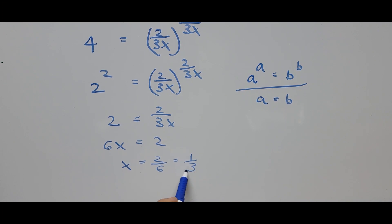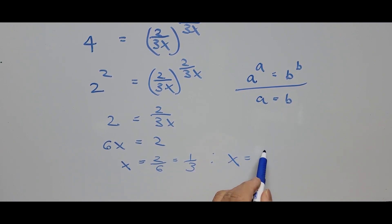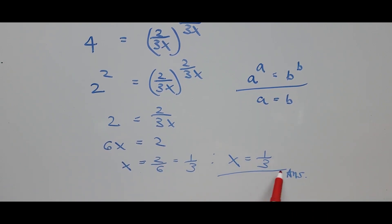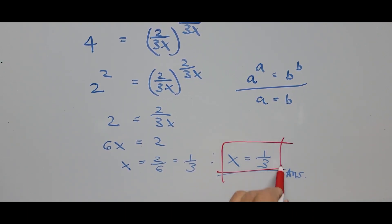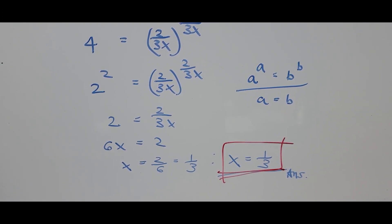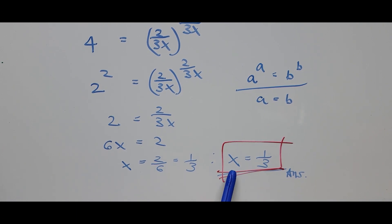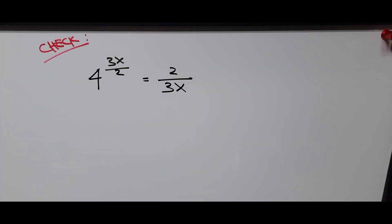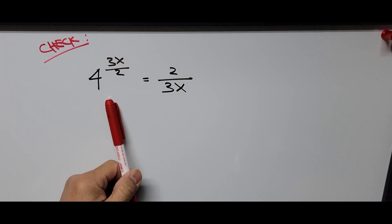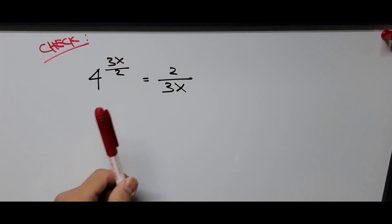So x is equal to 2 divided by 6, which equals 1/3. Therefore x equals 1/3 — that is our final answer. Now we're checking our answer just to make sure this is right, by substituting the value of x back into the original equation.